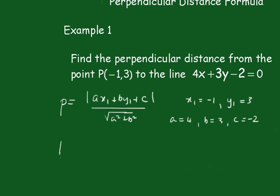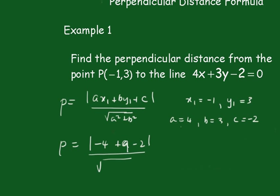So it's just a simple matter of substituting those values in. That becomes: negative 1 times 4 is negative 4, and 3 times 3 is 9, then 9 minus 2, all over the square root of a squared, which is 16, plus b squared, which is 9. And that becomes 3 on 5. That's your perpendicular distance.